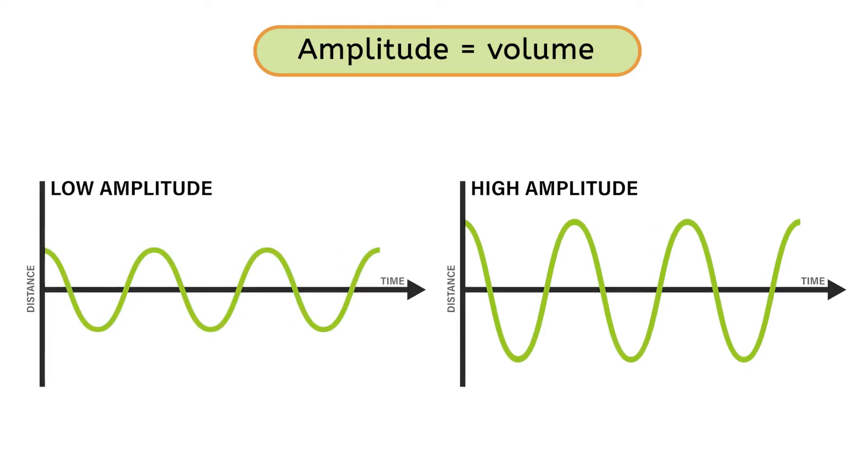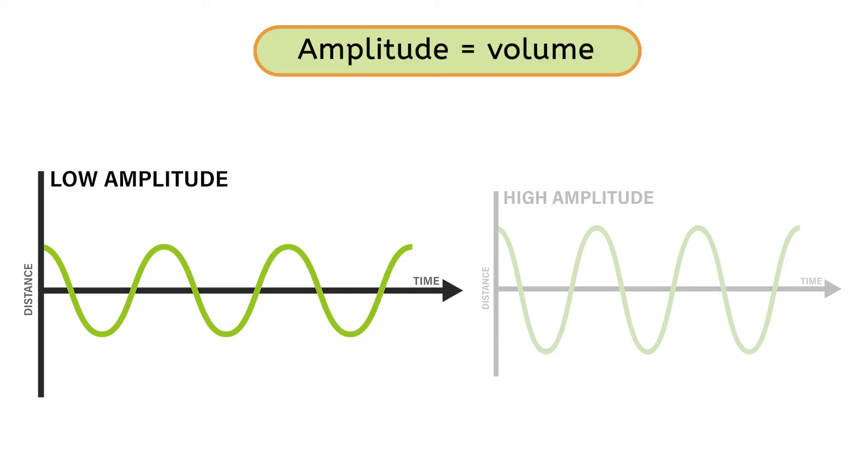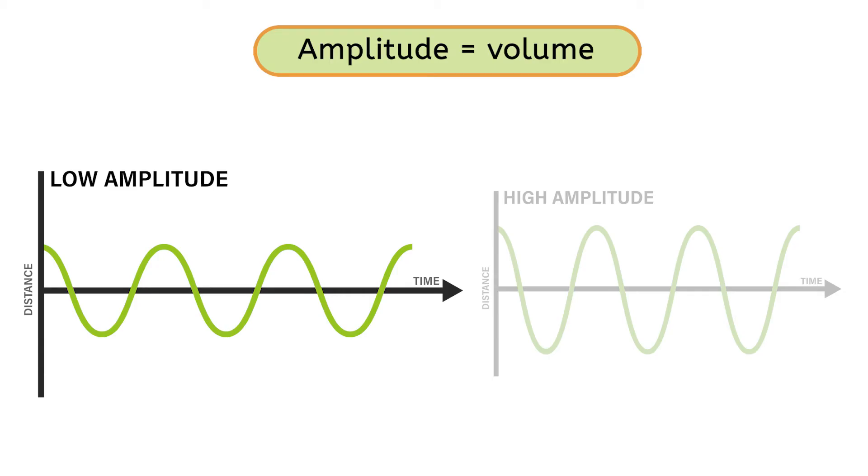Which one is showing a quieter sound? Good. The wave with the smaller amplitude represents a quieter sound. The amplitude of a sound wave shows the volume of a sound.